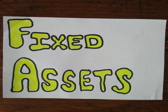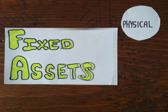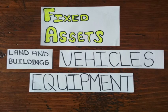Fixed assets and the historical cost principle. Fixed assets are physical assets — physical means you can touch them. That's why fixed assets are sometimes called tangible assets. Fixed assets are non-current assets, which means that the company intends to use these assets for more than a year. Examples of fixed assets are land and buildings, vehicles, and equipment.